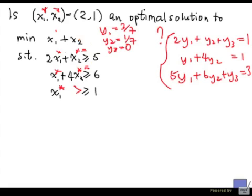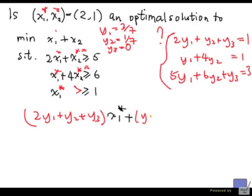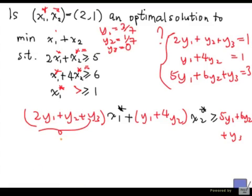now let's work with the star. So now I'm having 2y1 plus y2 plus y3 times x1 star plus y1 plus 4y2 times x2 star. And on the right-hand side, I have 5y1 plus 6y2 plus y3. Now, we know that these are both equal to 1